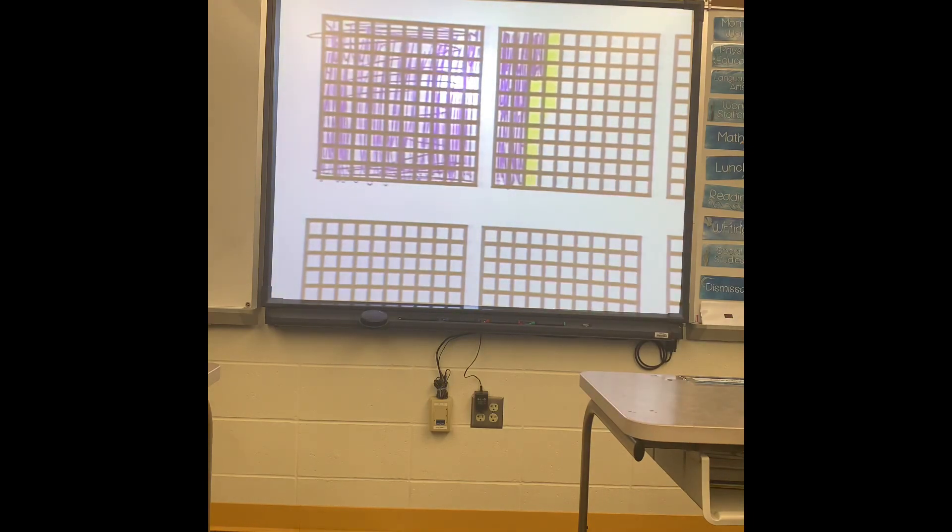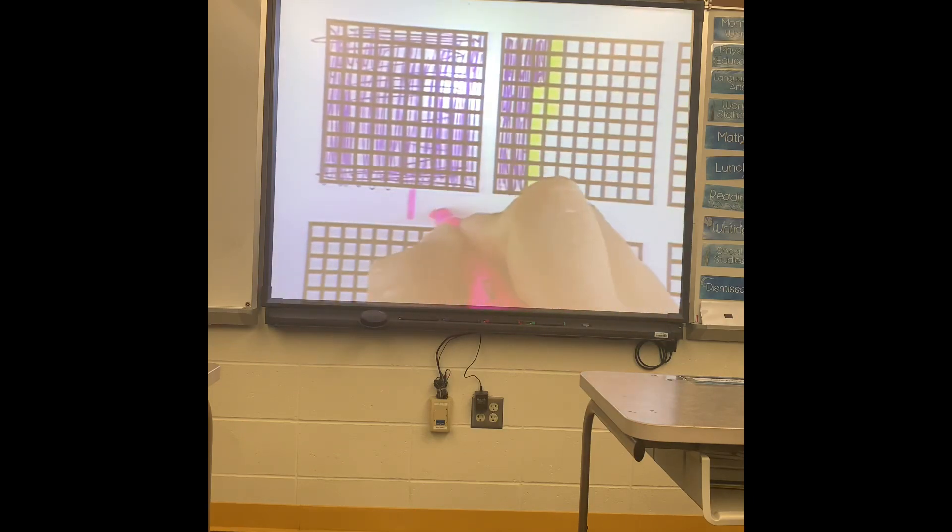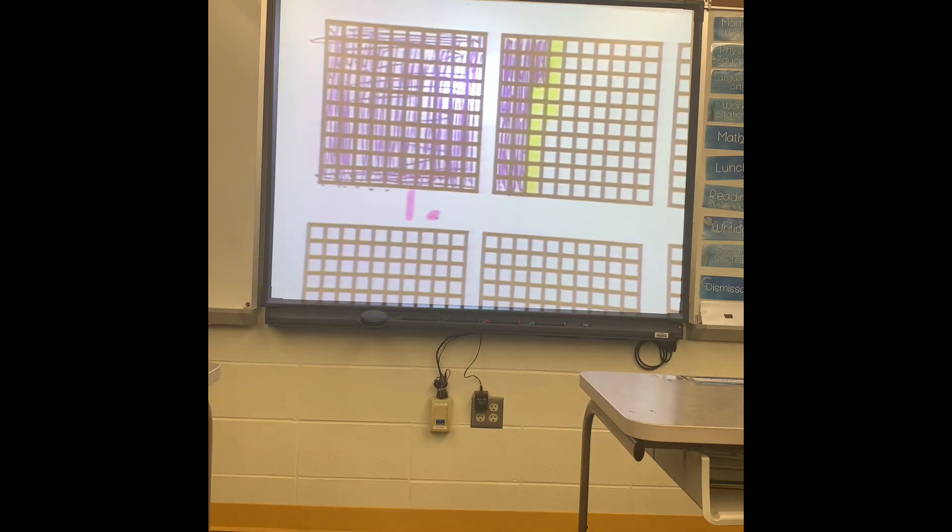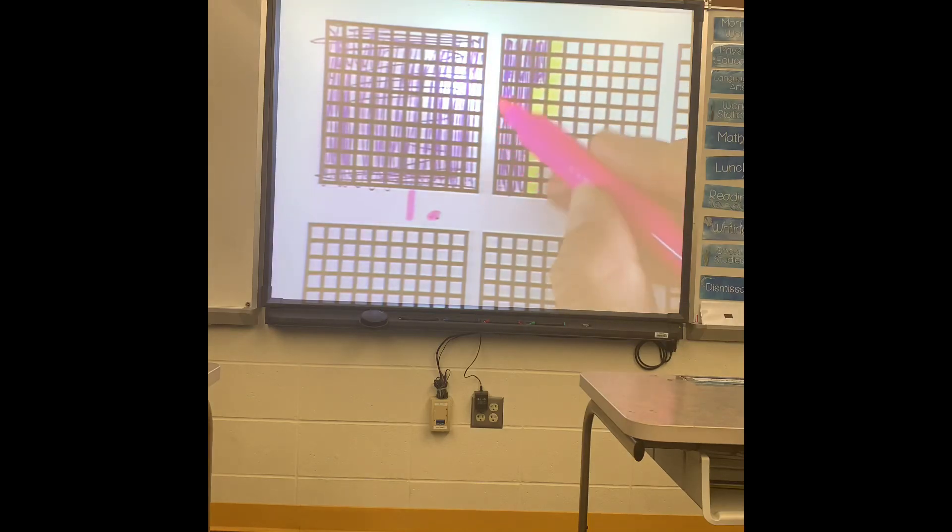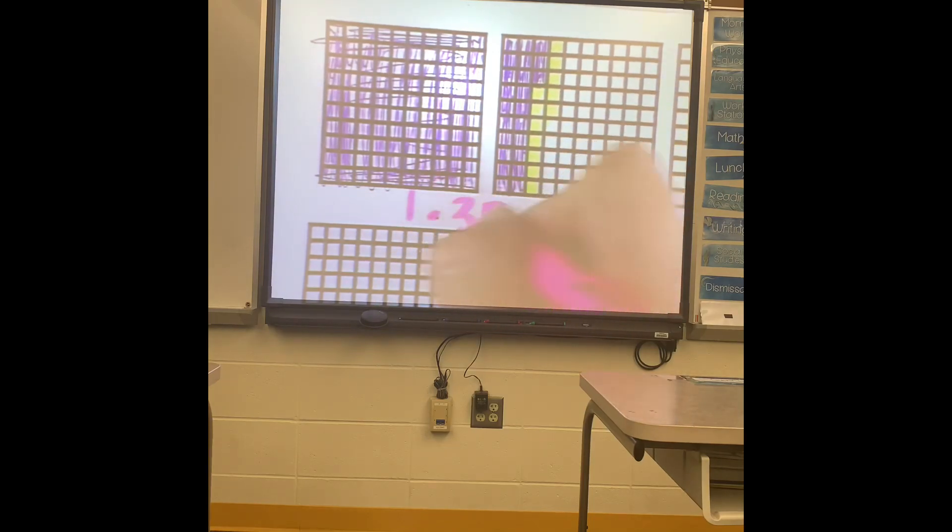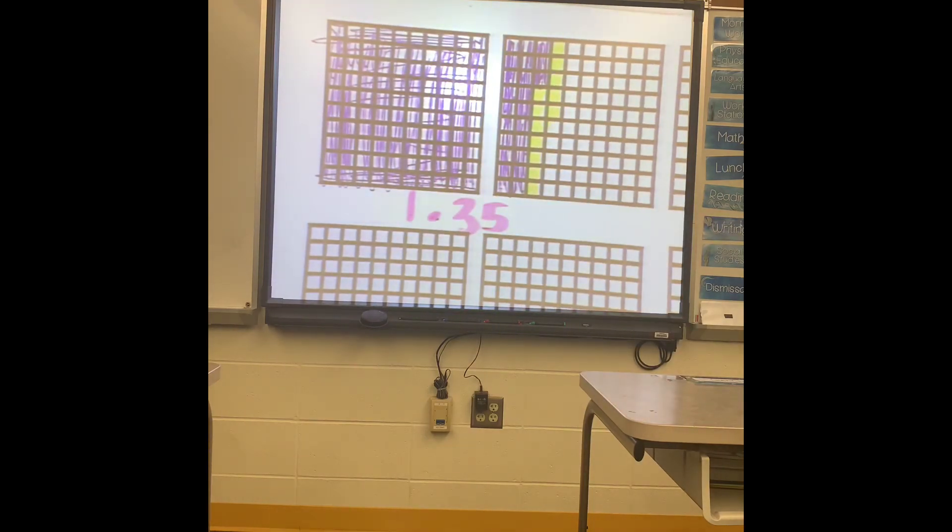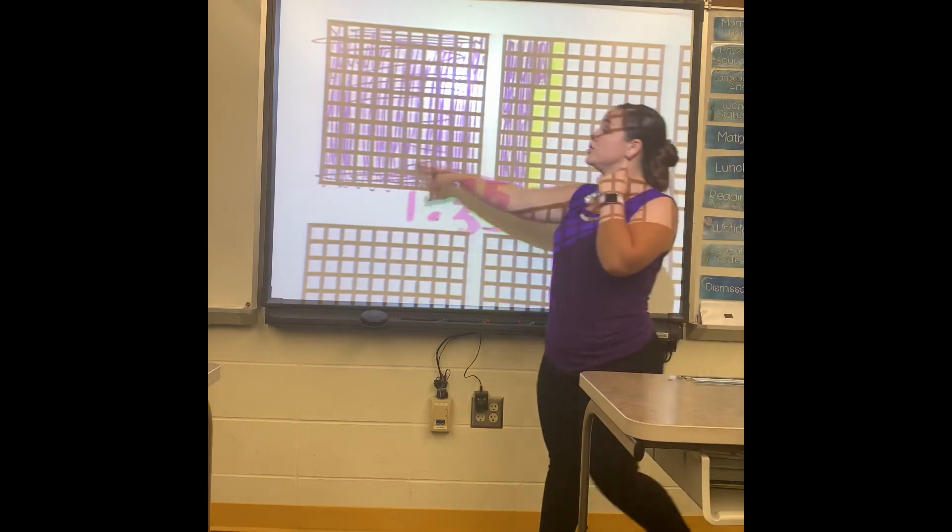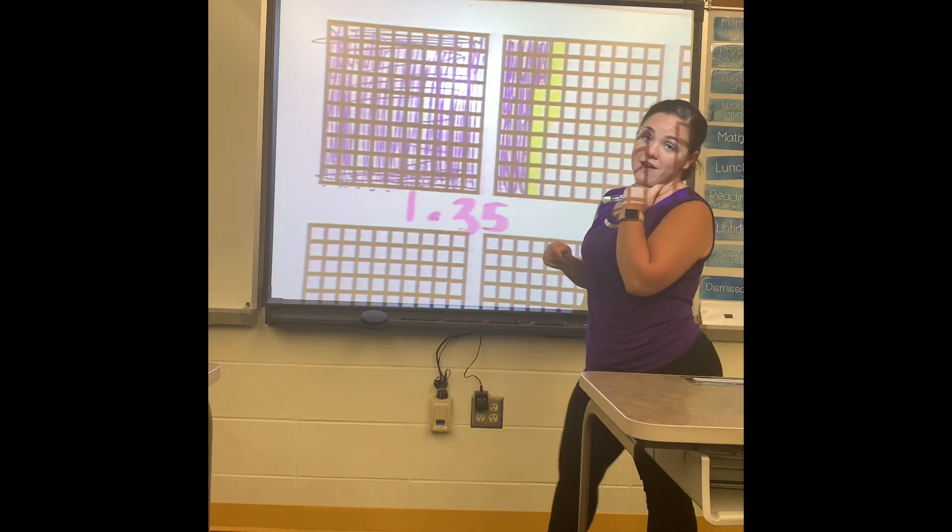So now I can see my answer. I have one full hundredth grid, so that would be my one. And then let's see, I have ten, twenty, thirty, thirty-one, thirty-two, thirty-three, thirty-four, thirty-five. So my answer for that one is one and thirty-five hundredths. That's because I still have one full one shaded and then I have thirty-five hundredths.